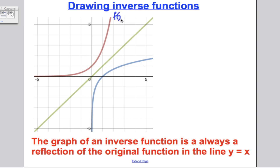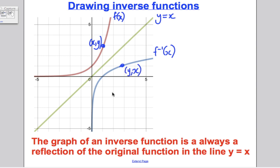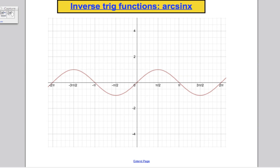The second important thing to remember: when you draw inverse functions, if this is your original function F(x), then the inverse F⁻¹(x) is always a reflection of the original function in the line y = x. For any point with coordinates (x, y) on the original, the reflected point is (y, x) — it just swaps the roles of x and y. We're going to use that when defining arc sine, arc cos, and arc tan.